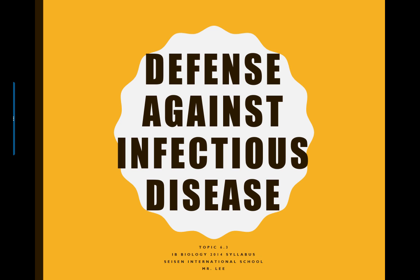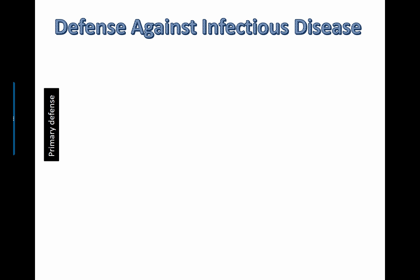Let's look at defense against infectious disease, one of my favorite topics to talk about because I am a carrier of multiple different diseases. So if we're going to talk about the primary defense system, obviously the next level would be the secondary defense system, which becomes a lot more specific. The primary defense system can be described as follows — some vocabulary you need to know. The thing that can cause an actual disease, the organism or virus — remember viruses are not considered living organisms because they're not made up of cells — that's called the pathogen.